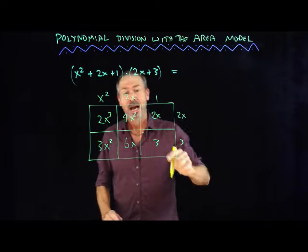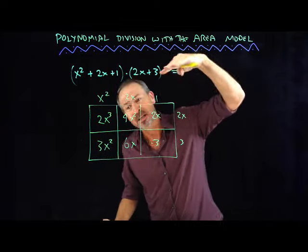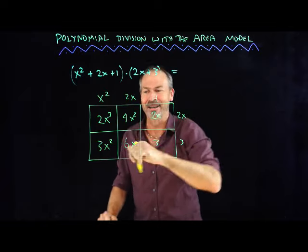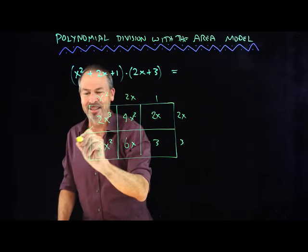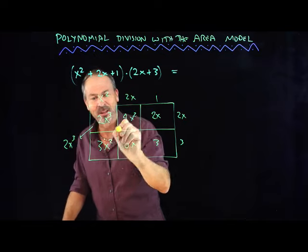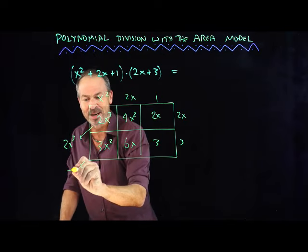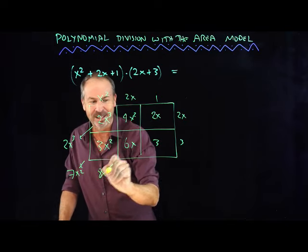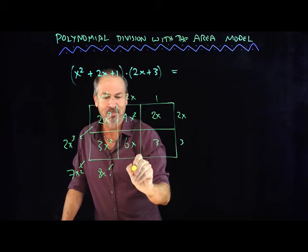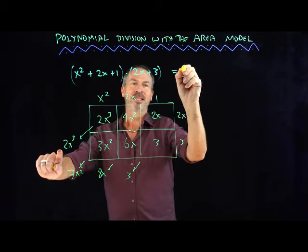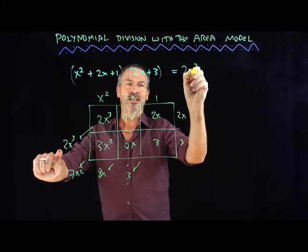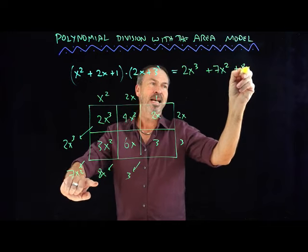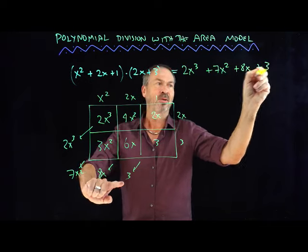What's lovely about the area model is that all the powers of x line up diagonally. You can see there's a 2x³ there, there's going to be 7x² on that diagonal, then 8x, and then 3. I can see the answer is 2x³ + 7x² + 8x + 3.